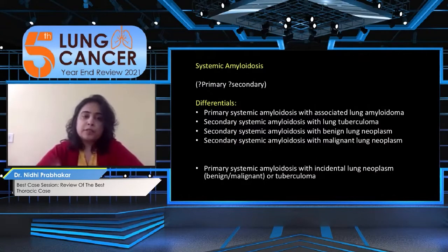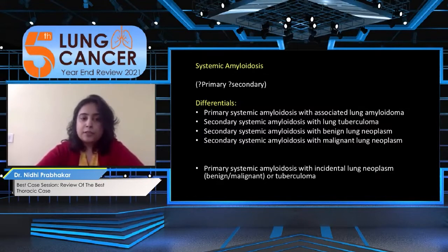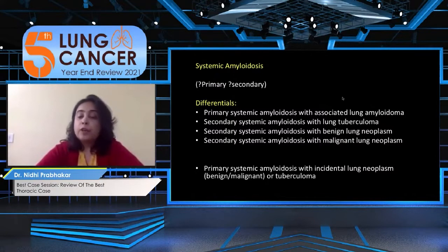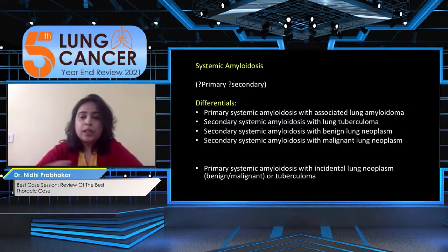A group discussion was held: the patient had systemic amyloidosis with multiple organs involved, but the cause — primary or secondary — was uncertain. One possibility was primary amyloidosis with the lung lesion being a pulmonary amyloidoma. Nodular septal amyloidosis has been reported, typically with multiple calcified nodules, which was unusual here but could not be entirely excluded.